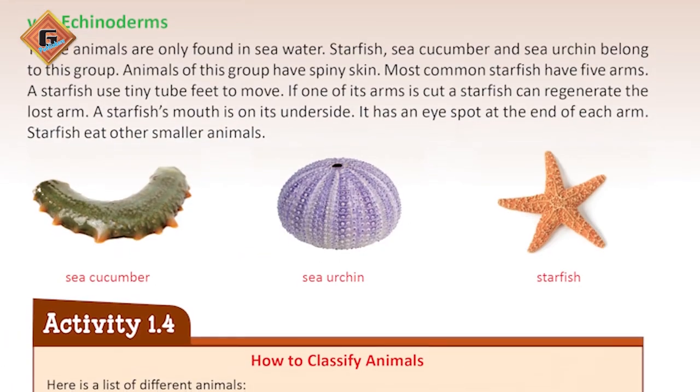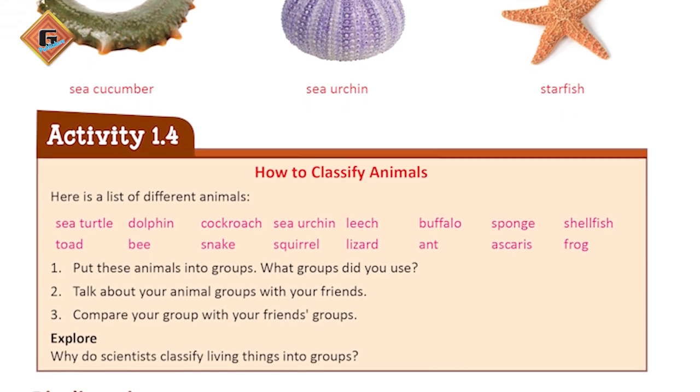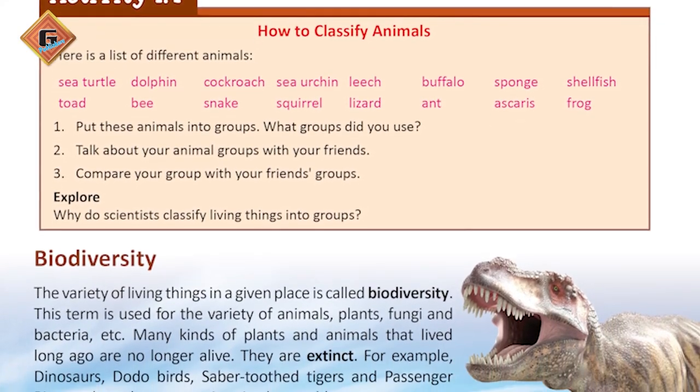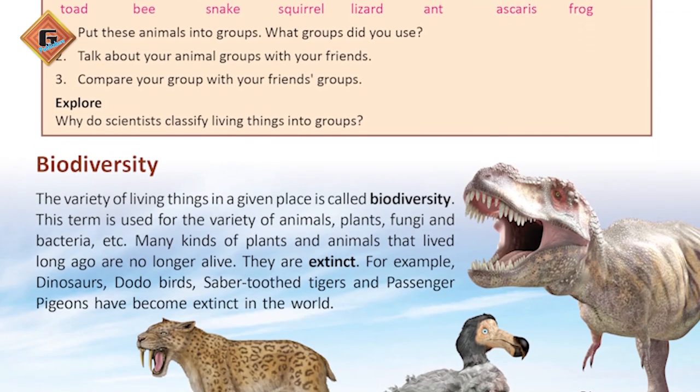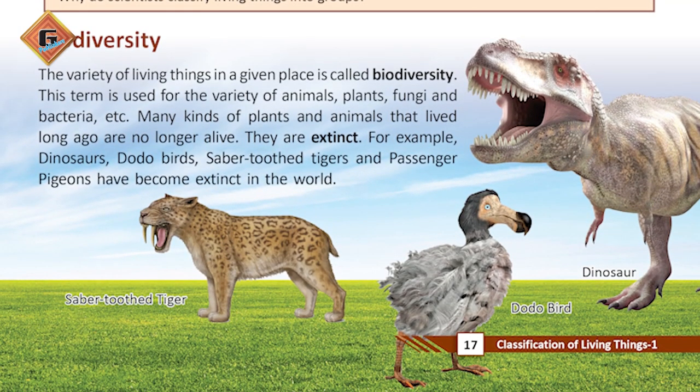Iske saath hi hum aage chalenge biodiversity ke concept ki taraf. Teachers, aap students ko biodiversity ka concept samjha sakti hain, jisme aapne biodiversity ko two groups mein divide karna hai — which is flora and fauna. Aap flashcard ki madad se students ko flora aur fauna ka difference batayein: fauna is animals and flora is all about plants. Students ko ye concept dene ke baad, aap un tamam factors ko discuss karein jo hamaari biodiversity ko affect karte hain.